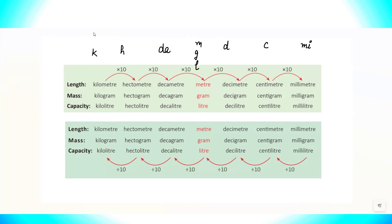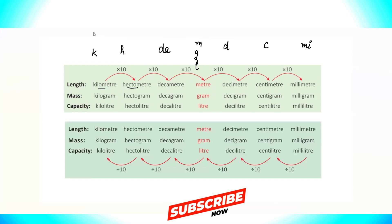Now you just have to remember this order. When converting a bigger unit into a smaller unit, like kilo into hecto, we always multiply. But when converting a smaller unit into a bigger unit, like milli into centi, we always divide.